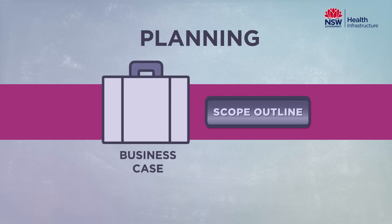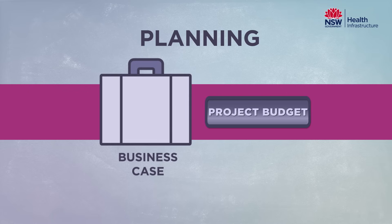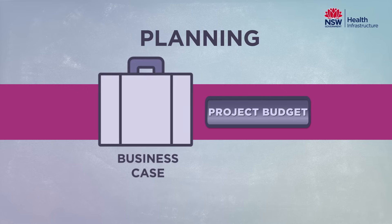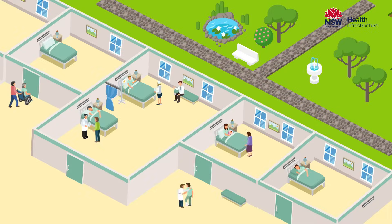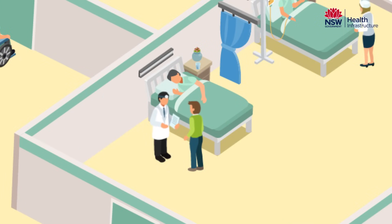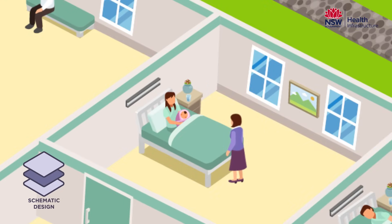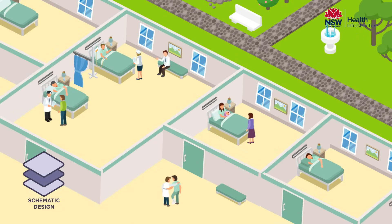The business case outlines our scope for the project and determines our budget for the redevelopment. Following the completion of the business case, we engage further with project user groups to inform the schematic design planning phase. Schematic design provides the next level of detail, such as how rooms and services relate to each other and how patients and staff flow through the facility.